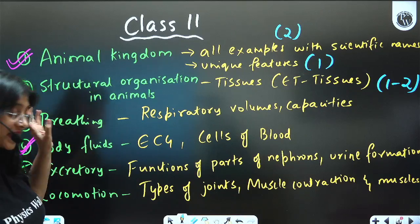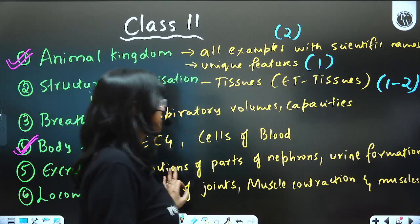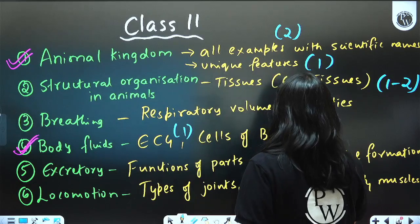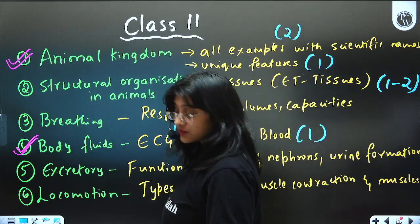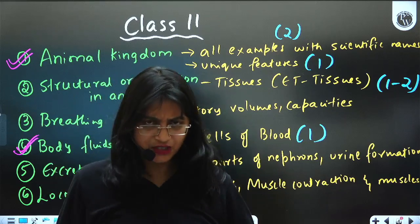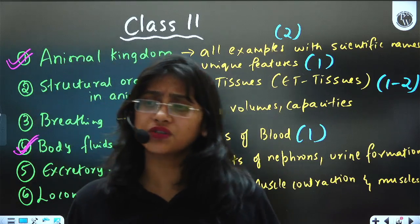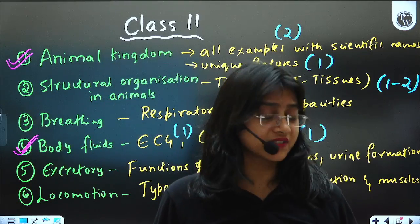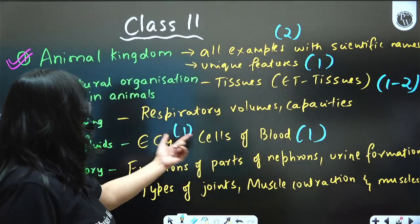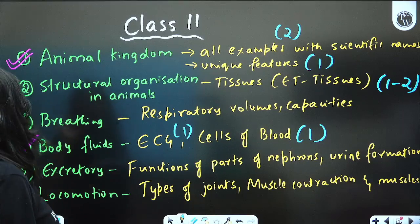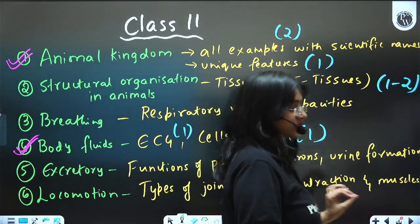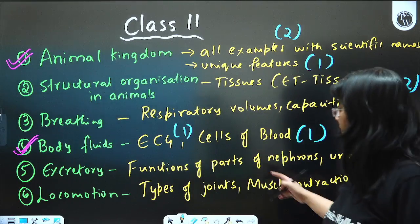From Body Fluids and Circulation, every year questions are asked — one question from ECG, one question from different cells of the blood, and other questions about disorders or the cardiac cycle. Questions are for sure asked from this topic every year.